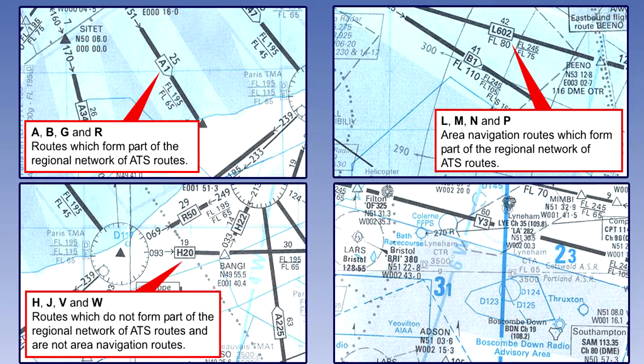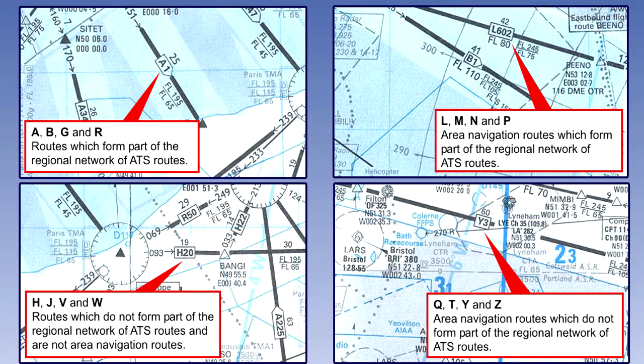H, J, V and W are for routes which do not form part of the regional network of ATS routes and are not area navigation routes. Q, T, Y and Z are for area navigation routes which do not form part of the regional network of ATS routes.